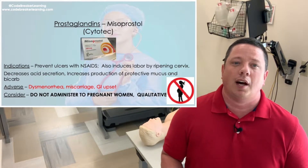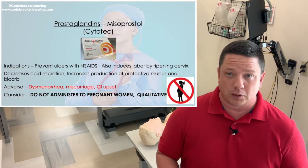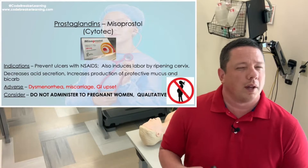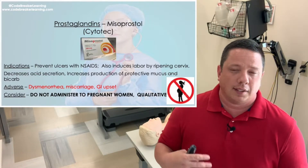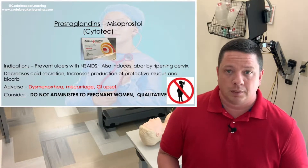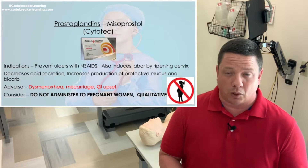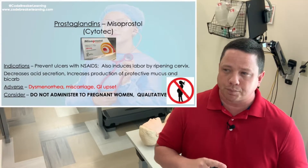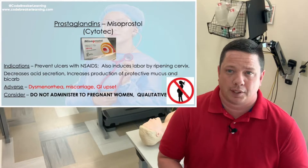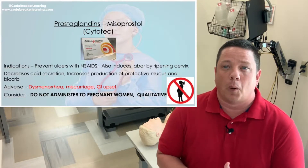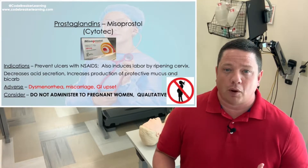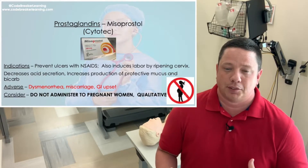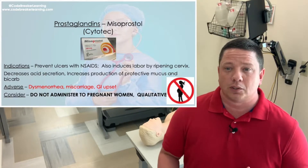This medication is used in GI to prevent ulcers for people that are taking excessive NSAIDs. Other drugs with high risk of ulcers include steroids — your prednisone, methylprednisolone, things like that. So Misoprostol is given to prevent ulcers for people excessively using NSAIDs or drugs that can cause ulcers.